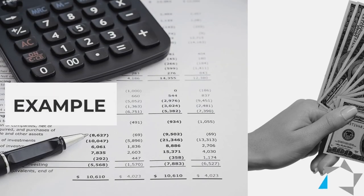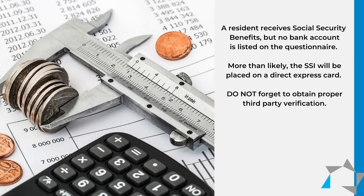For example, the resident receives Social Security and there's no bank account listed on the questionnaire or the application. More than likely the Social Security income will be placed on a direct express card. However, the file shows no mention or verification of a direct express card — nothing.